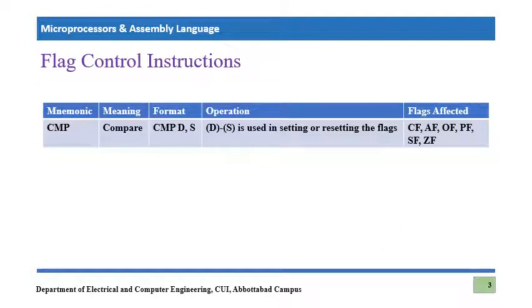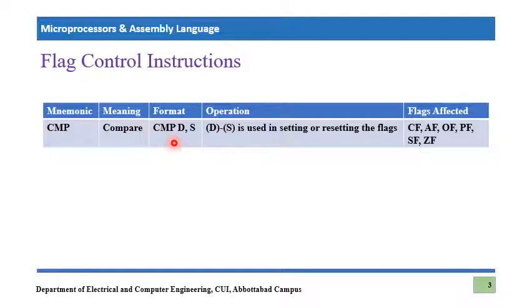This slide shows the operation and format of the compare instruction. The mnemonic or keyword for this instruction is CMP, which stands for compare. The format is simply CMP D, S — where D is the destination operand and S is the source operand.